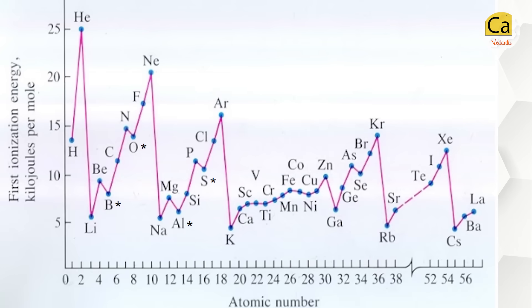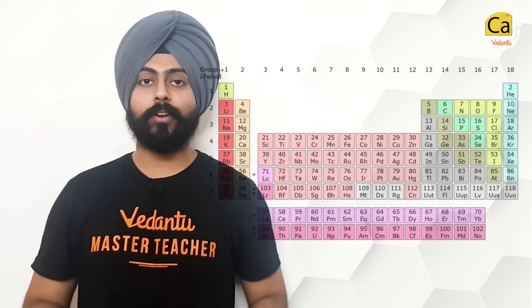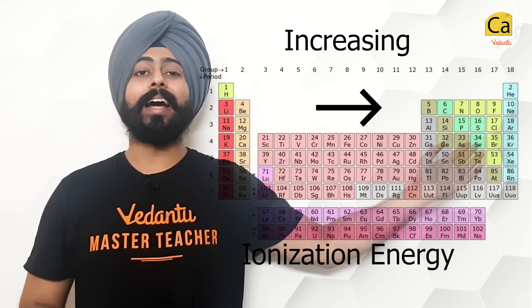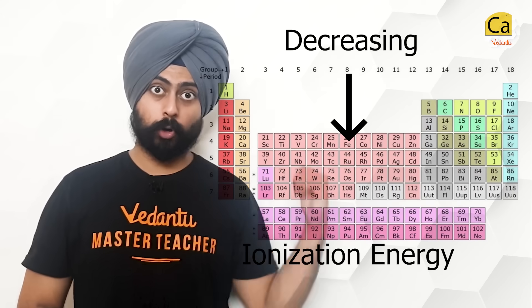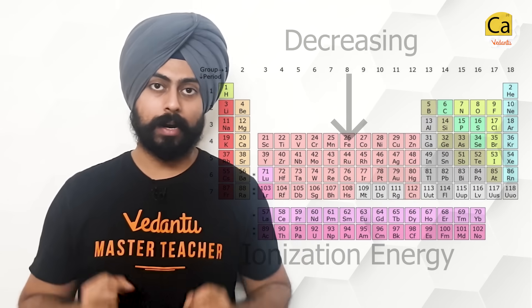There is a graph showing ionization enthalpies. Please notice beryllium versus boron, nitrogen versus oxygen, magnesium versus aluminium, and phosphorus versus sulfur — these are the anomalies in the trend. Beryllium and magnesium have fully filled valence orbitals, while nitrogen and phosphorus have half-filled valence orbitals, making them slightly more stable than expected and hence they have a little more ionization energy. From left to right, ionization energy keeps on increasing; from top to bottom, it keeps on decreasing.